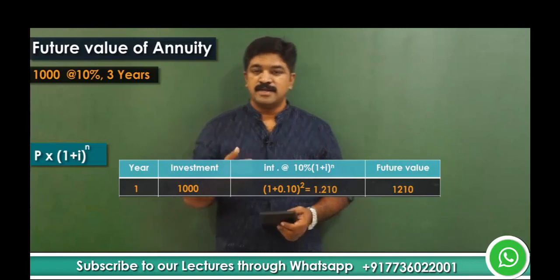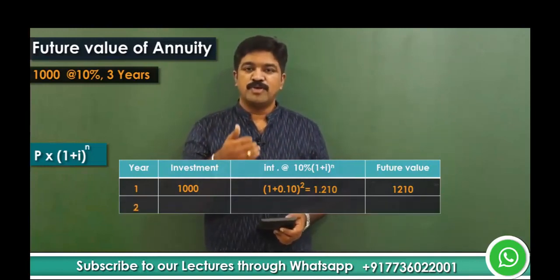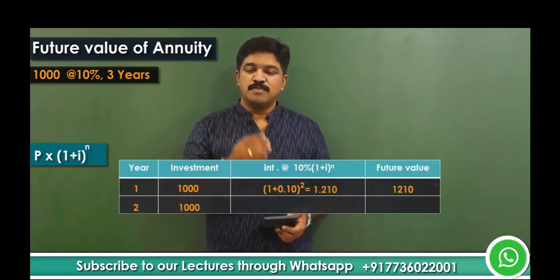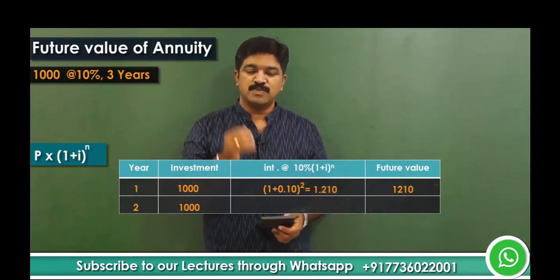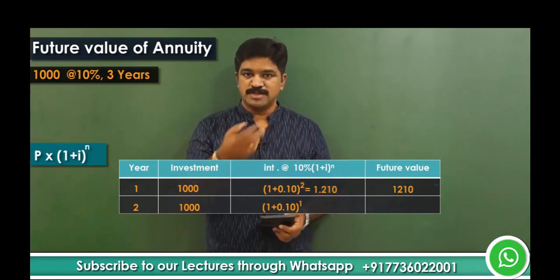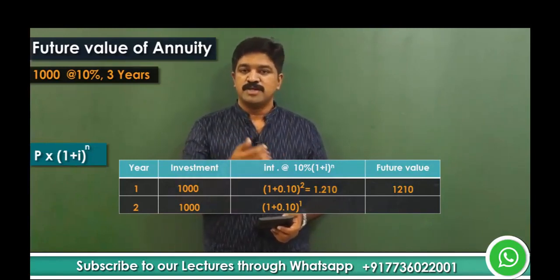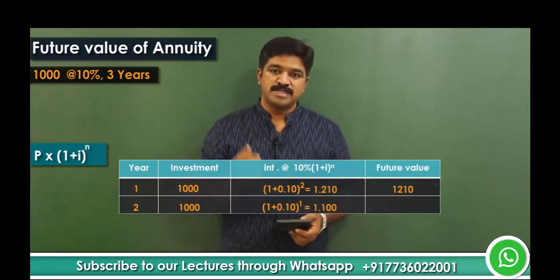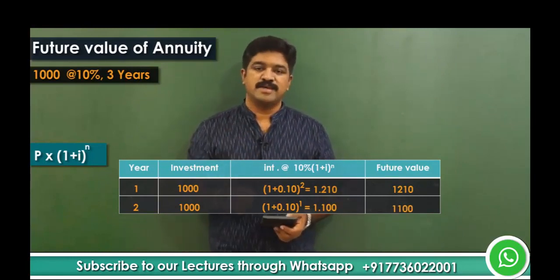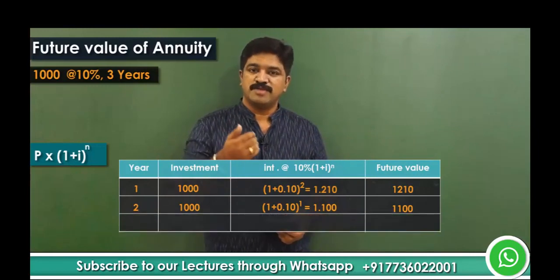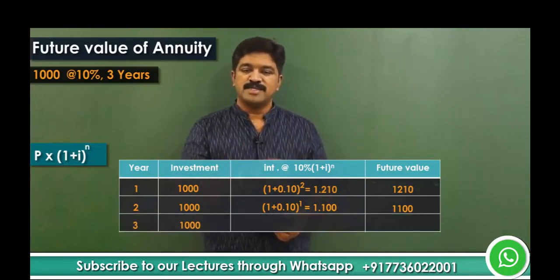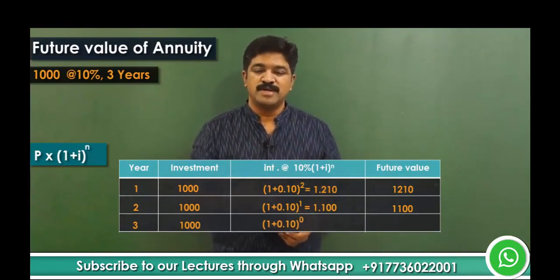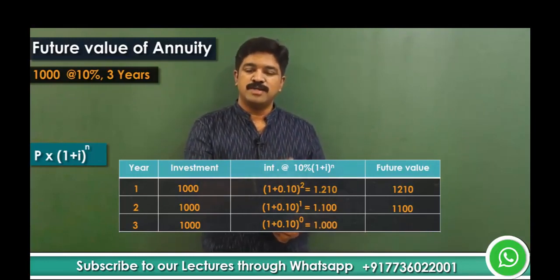Then at the end of year 2, you invest another 1000. The interest factor is (1 + 0.10)^1 because only 1 year remains, giving 1.1. So 1000 multiplied by 1.1 equals 1100 — the future value of the year 2 investment. For the investment at the end of year 3, the interest factor is (1 + 0.10)^0, which equals 1, so 1000 multiplied by 1 is simply 1000.